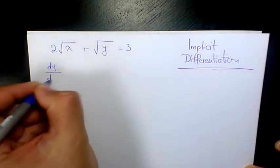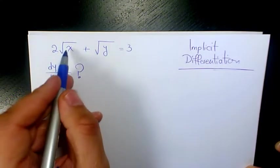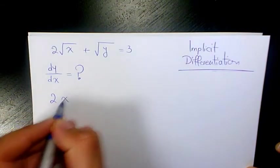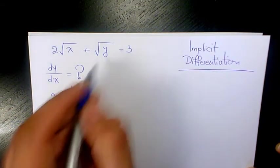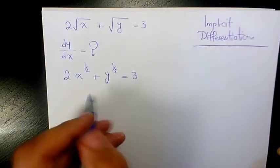So what we can do, I'm gonna change the square root of x to x to the power of one-half. Same thing for y equals to 3. Then when you find out the derivative, it's going to be 2 times the derivative of x to the power of one-half divided by dx, plus the derivative of y to the power of one-half divided by dx equals to d(3)/dx.